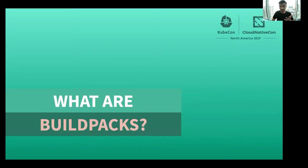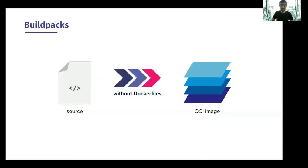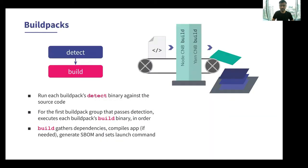So what exactly are Buildpacks? Cloud Native Buildpacks transform your application source code into runnable container images without Dockerfiles. Let's do a deep dive into the Buildpack API that makes this possible. First up, we have Buildpacks themselves. At its core, a Buildpack is just two executables: one called Detect, which detects whether a Buildpack is needed or not, and the other called Build, which does its part in building the final runnable image.